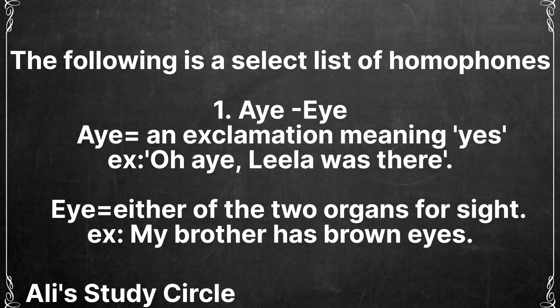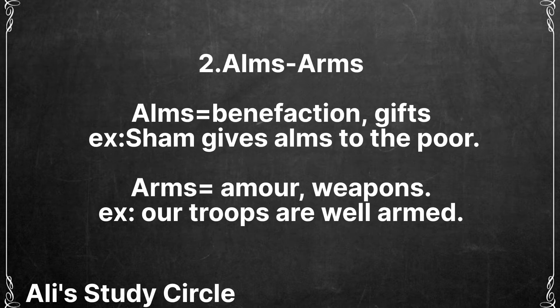The first homophone pair is 'aye' and 'eye.' 'Aye' is an exclamation meaning yes — for example, 'Oh aye, Lila was there.' 'Eye' refers to either of the two organs for sight — for example, 'My brother has brown eyes.'